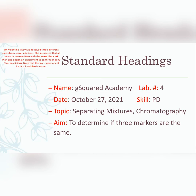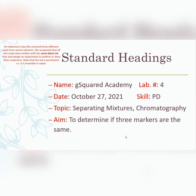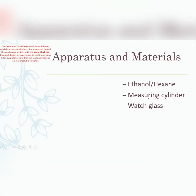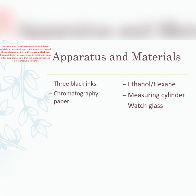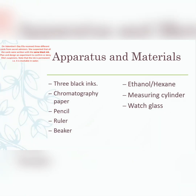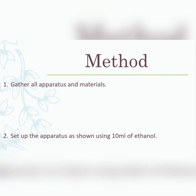Our aim is simply to determine if the three markers are the same — that's all we're trying to find out. For apparatus and materials, we're going to need the three inks, chromatography paper, pencil, ruler or beaker. Since the markers are permanent and insoluble in water, we cannot use water as the solvent, so we'll use ethanol or hexane — I'm going to use ethanol. We'll also need a measuring cylinder and a watch glass.